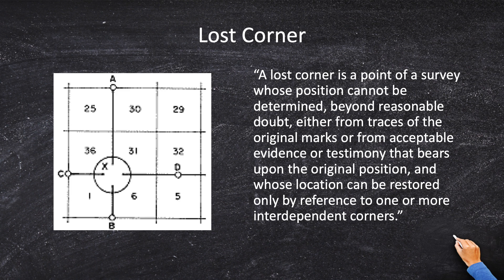If you can do anything to classify it as obliterated — any type of credible evidence — do it. Resetting a lost corner from other corners that are miles and miles away is, number one, a pain; number two, expensive; and number three, not that accurate. A lost corner is a corner that is not existent or obliterated, so you have to go out, find other corners, and reset it using single or double proportion.